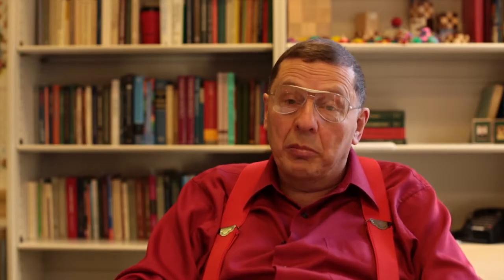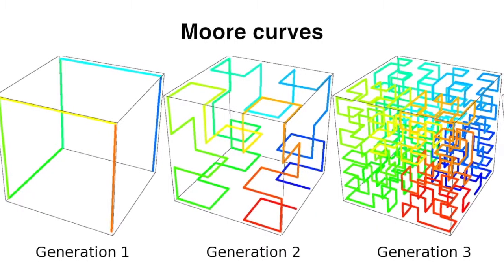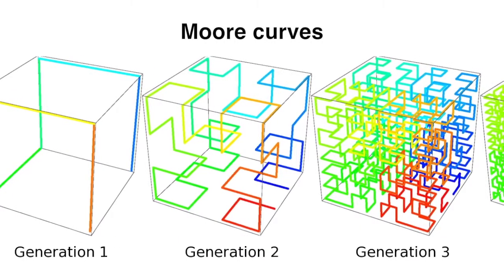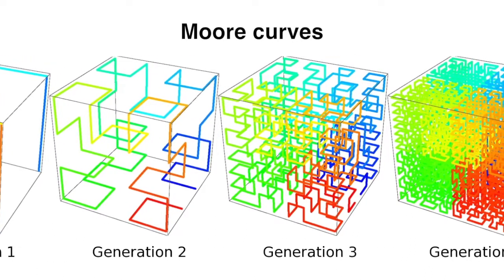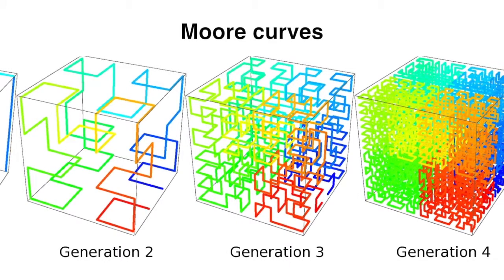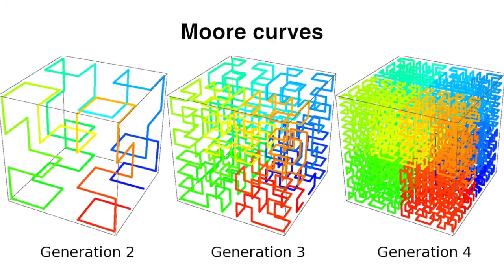These space-filling curves are very similar to the conformations of crumpled globules, and therefore are to some extent similar to what is observed in DNA by chromosome capture methods. It is all connected to one field: the biology of chromosome capture experiments, the physics of crumpled and fractal conformations of topologically restricted polymers, and the mathematics of self-similar space-filling curves.